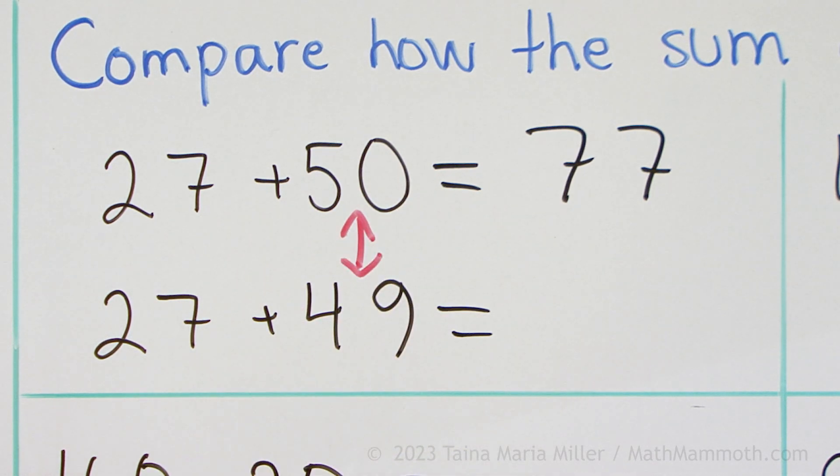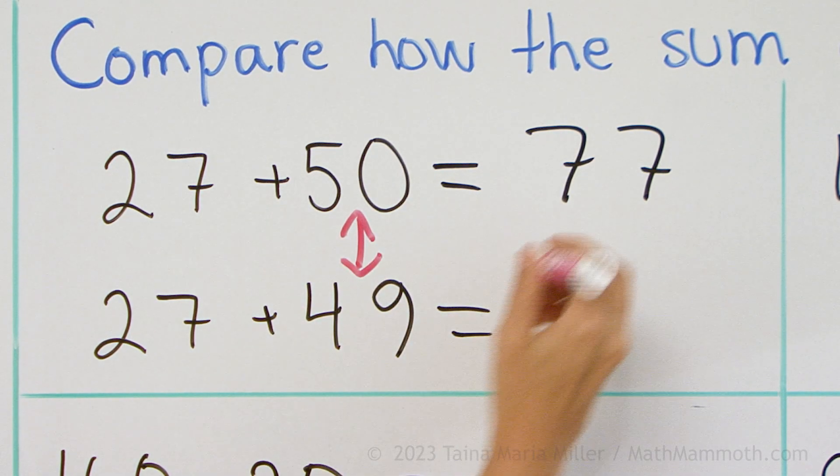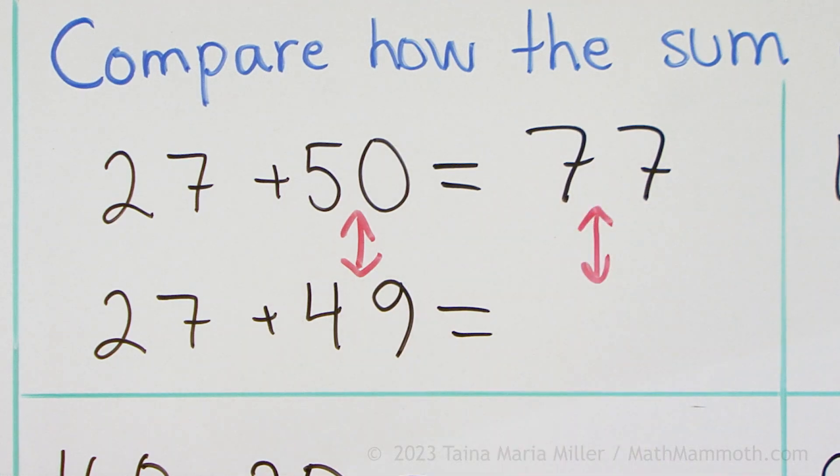49 is just one less than 50. So over here in the answer also it will be one less than 77, so that's 76.